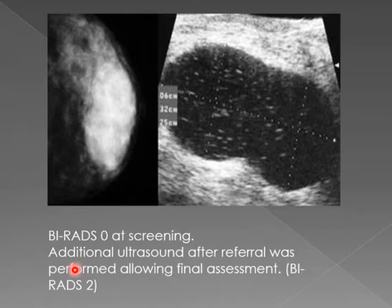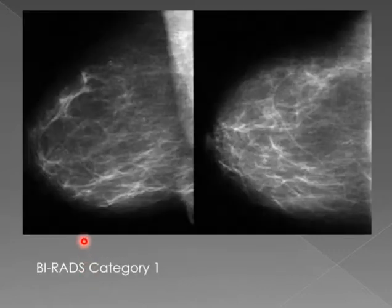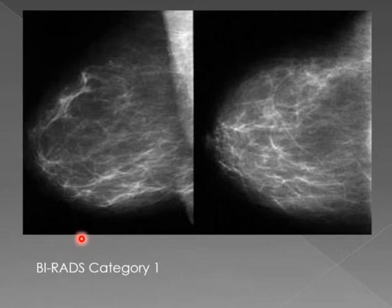It could be a colloid cyst, but the more common differential depends on the patient's history. If she's lactating, a galactocele is more likely. If there is a history of trauma, a hematoma is more likely. If there was surgery, a seroma or hematoma is more likely. You need the clinical history, but in any case it is BIRADS 2 — benign. Our job is to say whether this is benign, more likely malignant, or malignant.